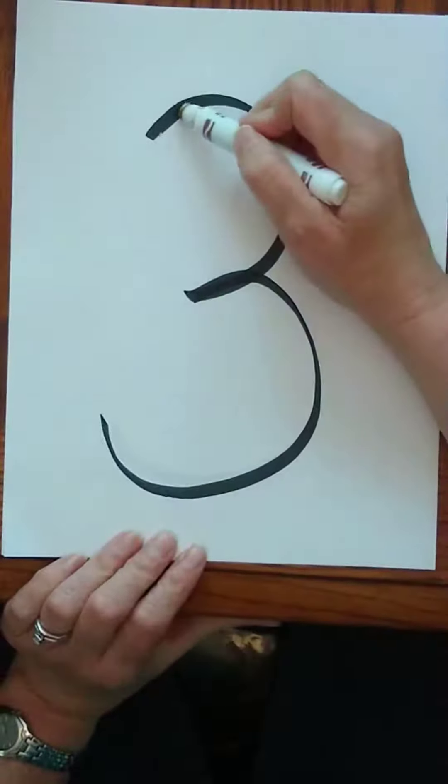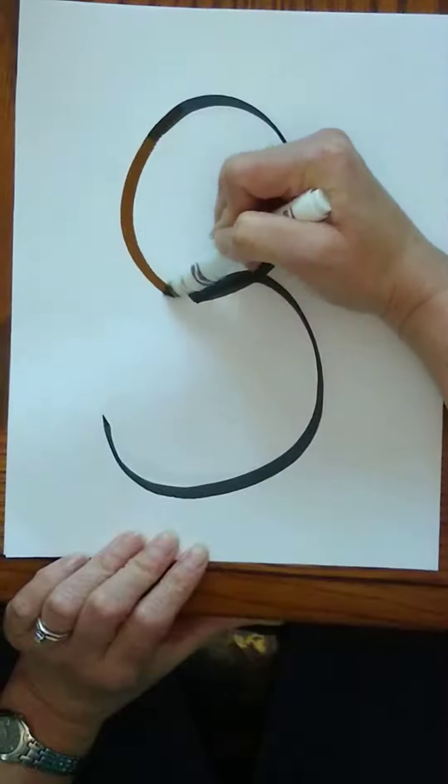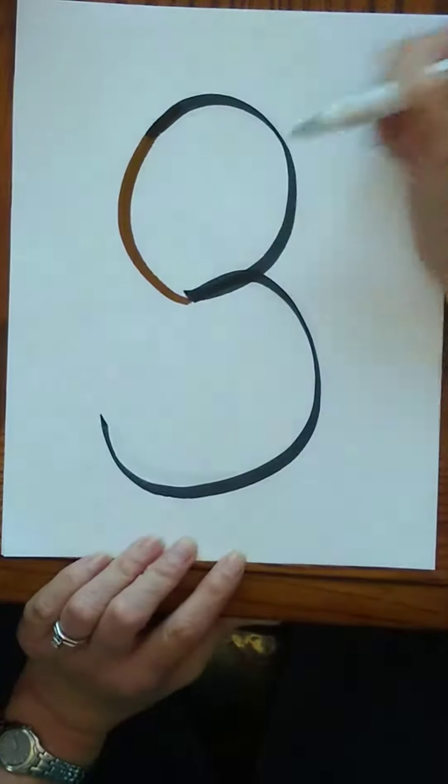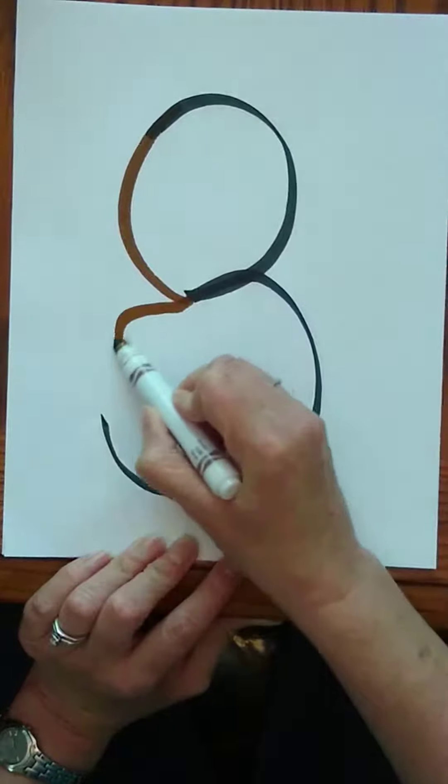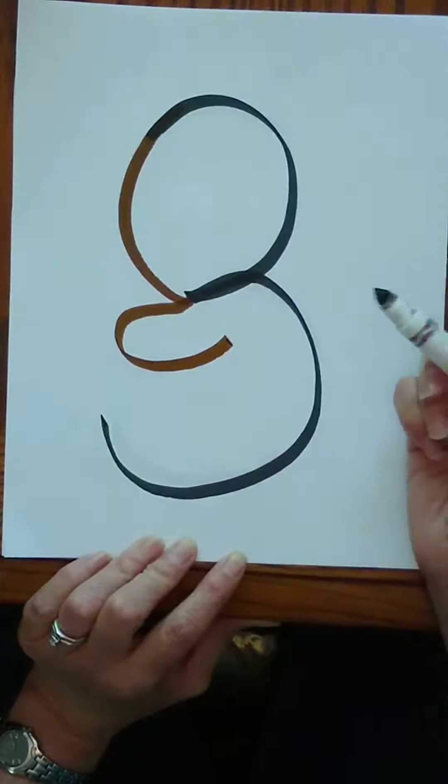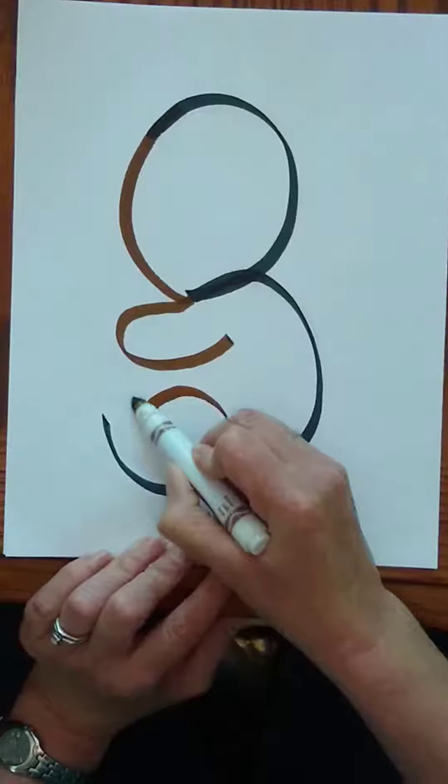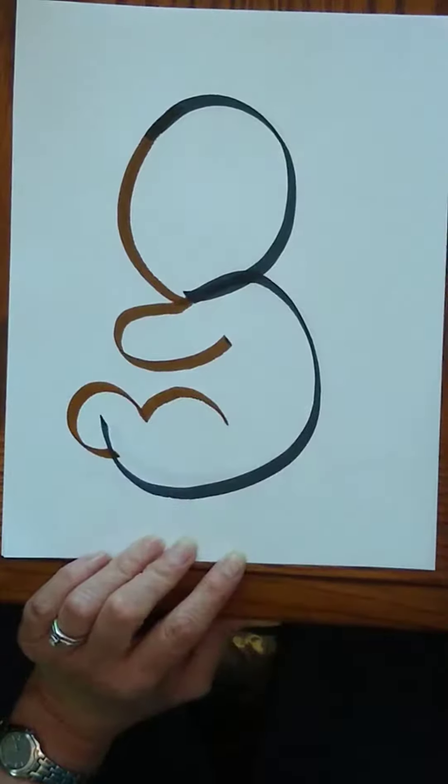First thing we'll do is we'll start by finishing the circle and that makes a bunny head. Then we'll add an arm and a lower leg.